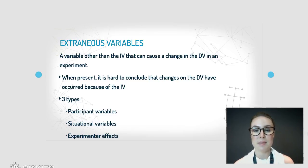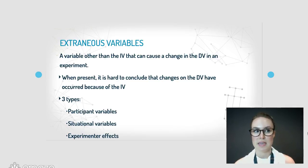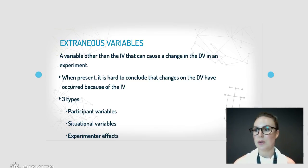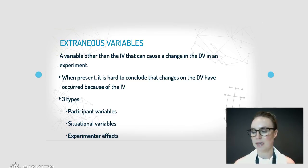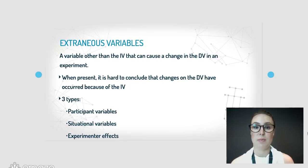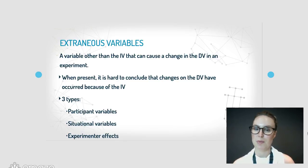For example, in the sleep experiment, if those who got six hours of sleep were put up in a hotel whereas those who got three hours of sleep were put on a mattress on the floor, that variable of where they're sleeping is an extraneous variable and it's going to impact the results. Obviously you're not going to sleep very well if you're on the floor.